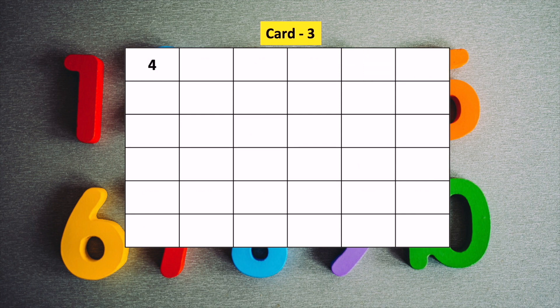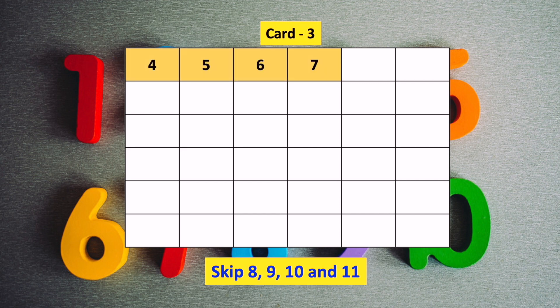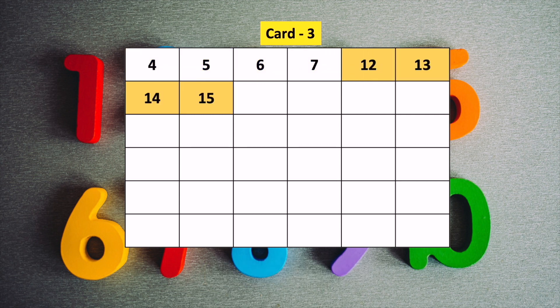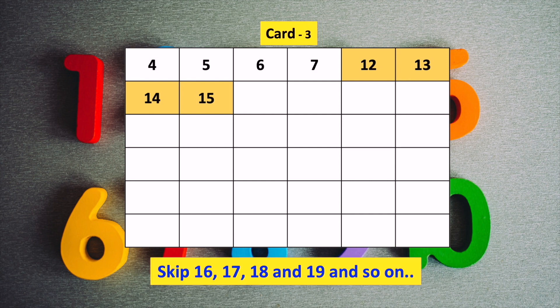For the third card, we start from number 4. For this time, we will write 4, 5, 6, 7 and then skip 8, 9, 10 and 11. We continue like this till number 63.